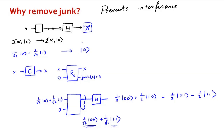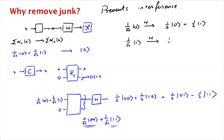So what happened here? Let's see what happened when we did the Hadamard without the junk qubits. Well, 1/√2 |0⟩ after the Hadamard went to 1/2 |0⟩ + 1/2 |1⟩, whereas 1/√2 |1⟩ after the Hadamard went to 1/2 |0⟩ − 1/2 |1⟩. So when you start with the superposition of these two, you add them: this part cancels — that's destructive interference — and this part reinforces — constructive interference — and you get as outcome 1 times |0⟩.